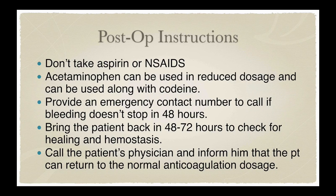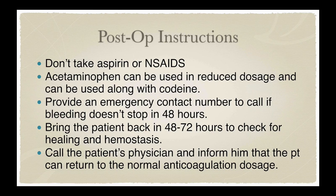For postoperative instructions with Von Willebrand's disease patients, make sure they do not take aspirin or NSAIDs — any agents that act as blood thinners should be avoided. Acetaminophen can be used instead in reduced dosage, and it can be combined with codeine as well. You need to provide an emergency contact number and educate the patient that if bleeding doesn't stop within 48 hours, they need to contact you, and then you discuss whether to refer the case.